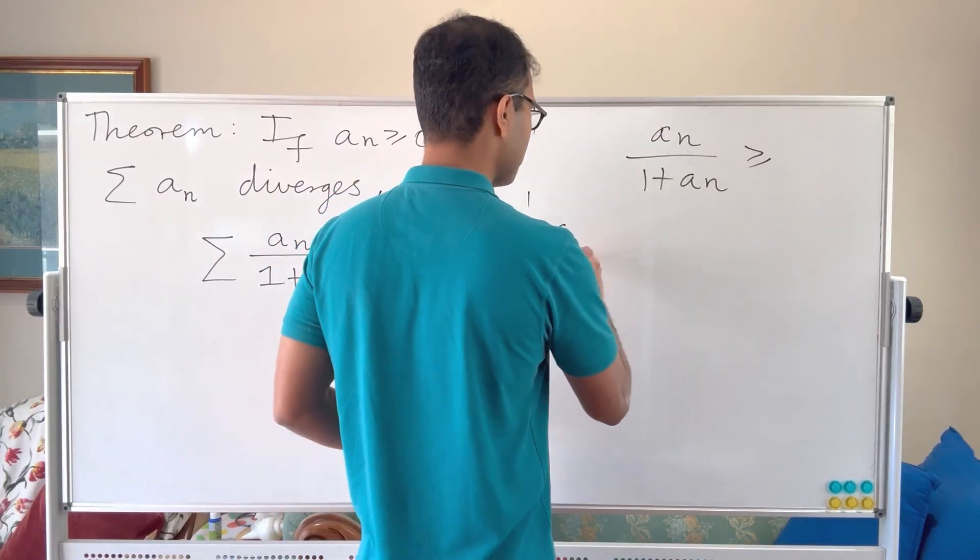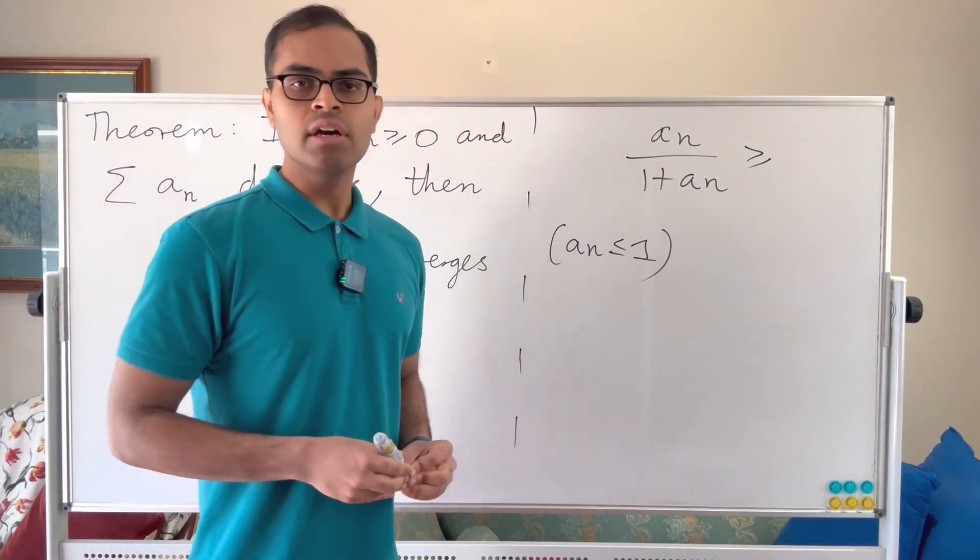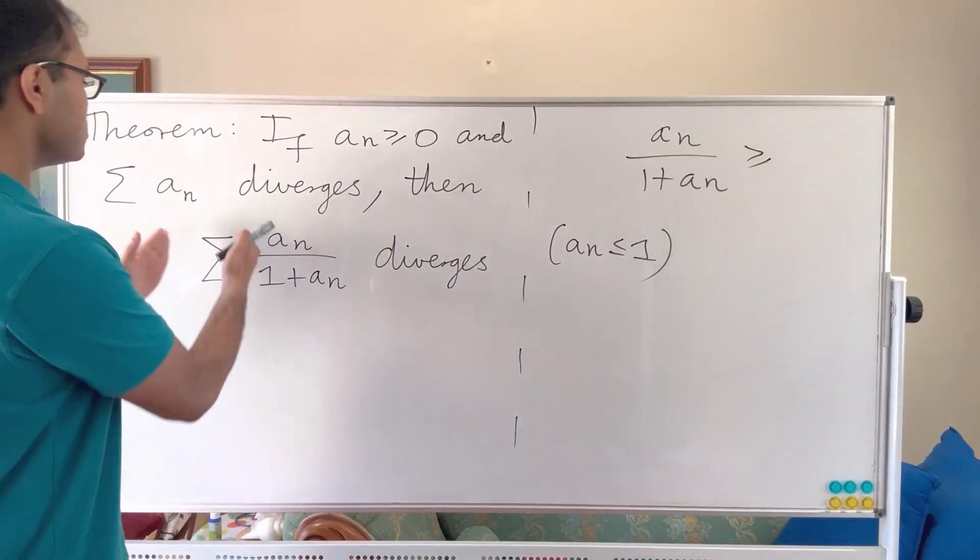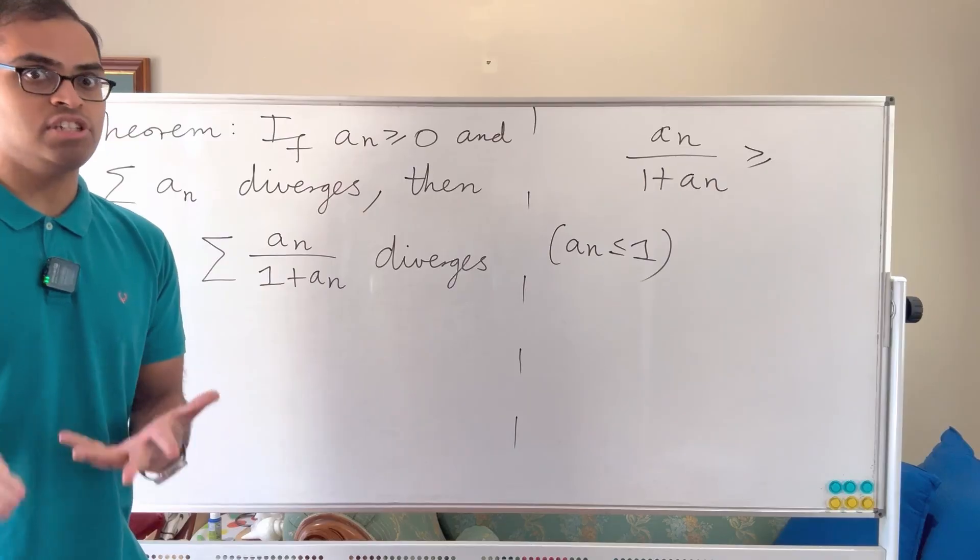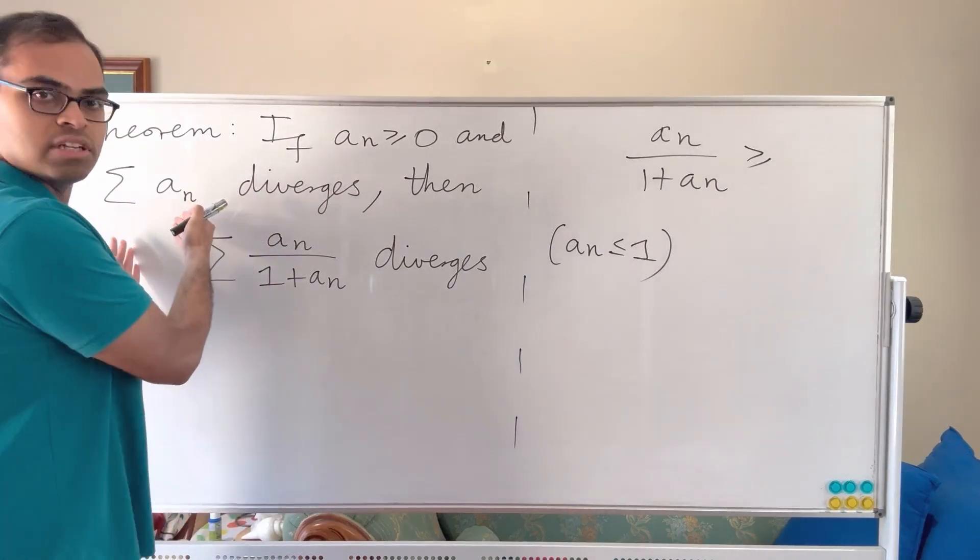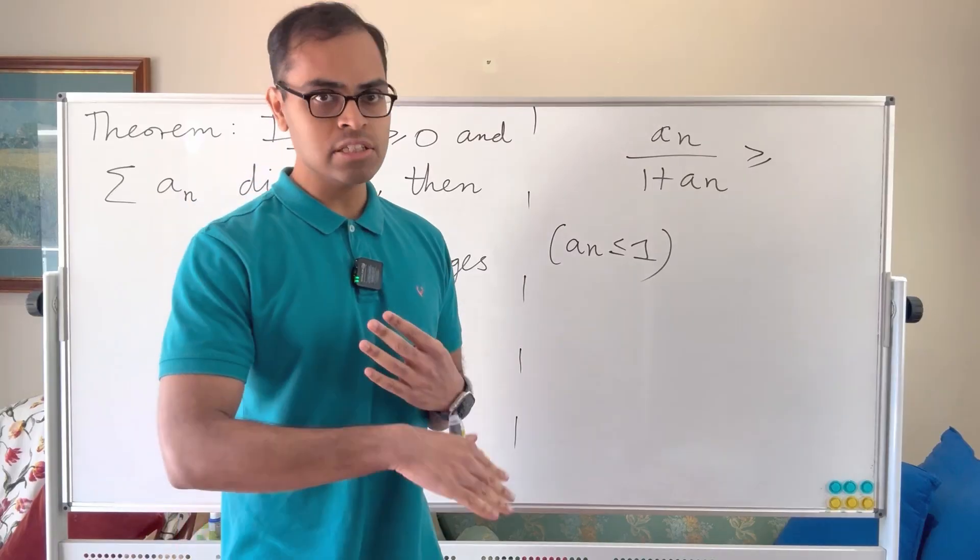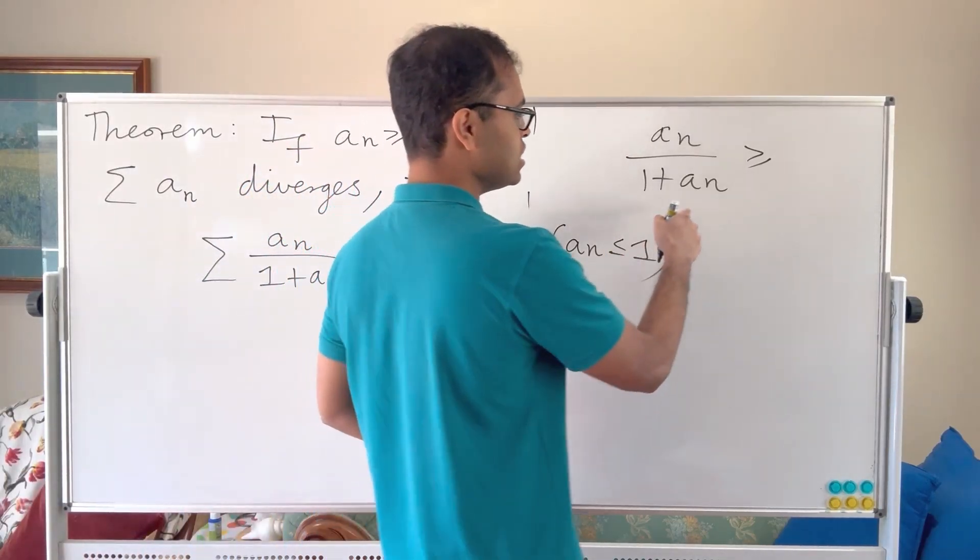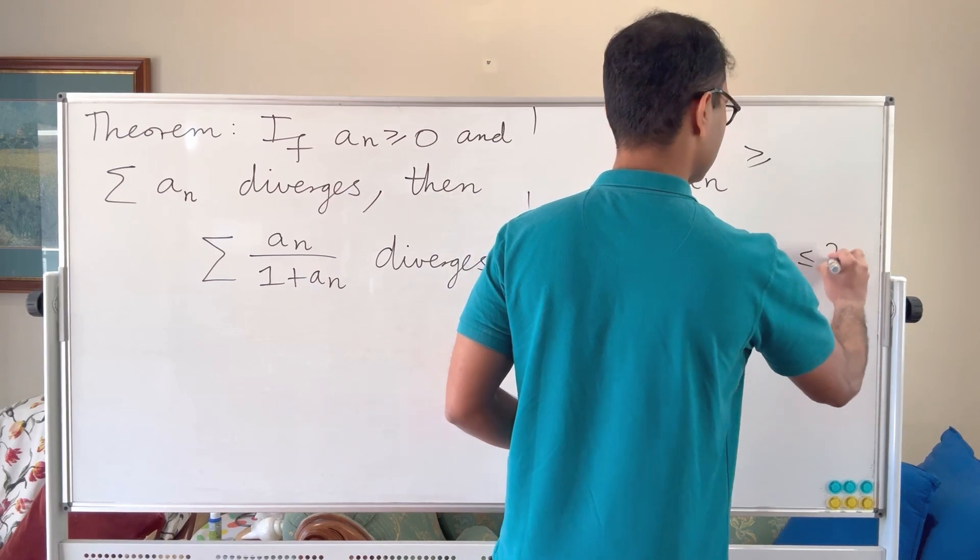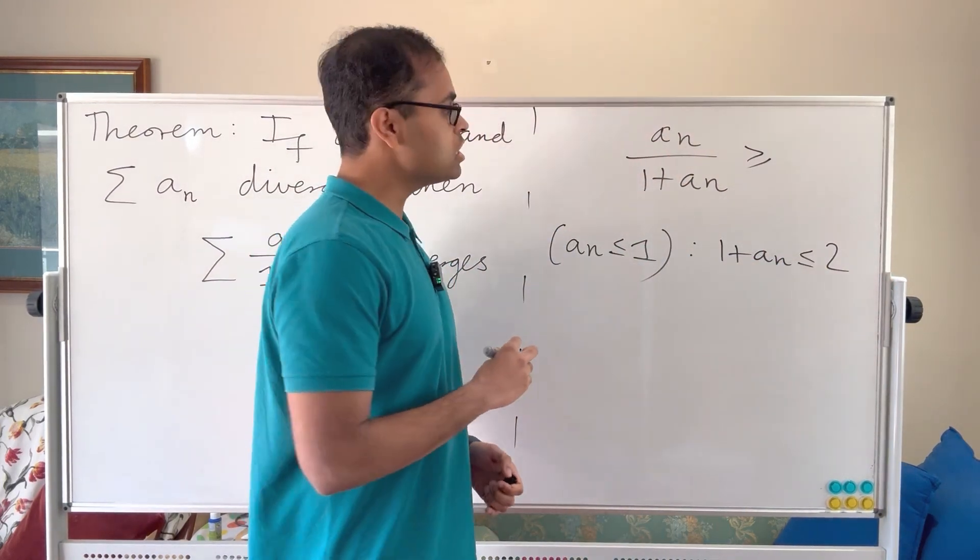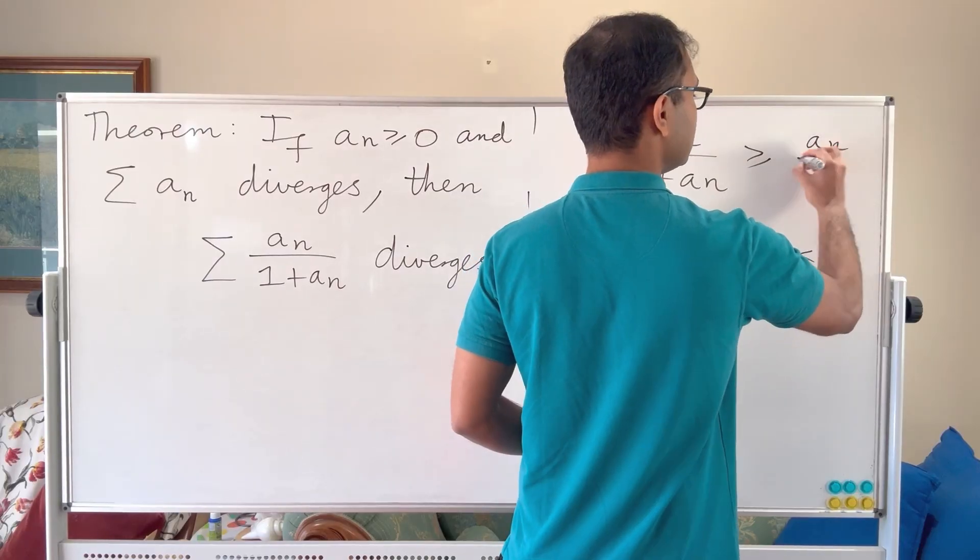If we know for example that an is less than or equal to 1, let's say eventually. So let's say that some an is an interesting divergent series, its limit of its terms is 0, which has to be true for a series to converge, but still it diverges. In that situation, an less than or equal to 1 is a fair assumption as long as n is large, and in that case we can say 1 plus an is going to be less than or equal to 2 for n sufficiently large, and then if you take the ratio you can say this is going to be greater than or equal to an over 2.